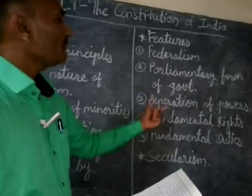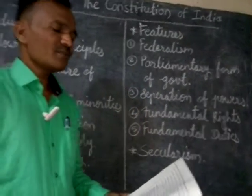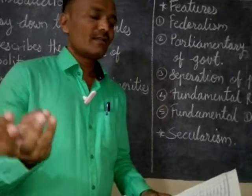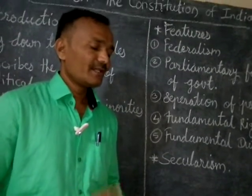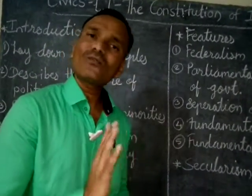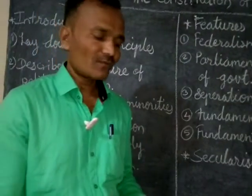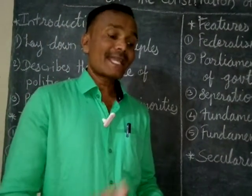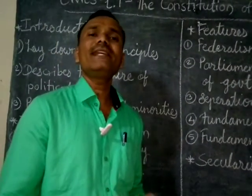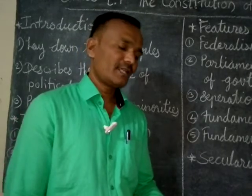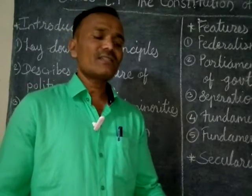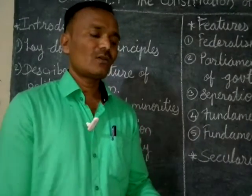The next feature is separation of powers. There are three organs of government: the legislature, executive, and judiciary. The legislature is a group of elected representatives who frame laws on behalf of the entire population. The executive implements these laws and is fully answerable to the legislature. The judiciary protects the interest of the people of the country.